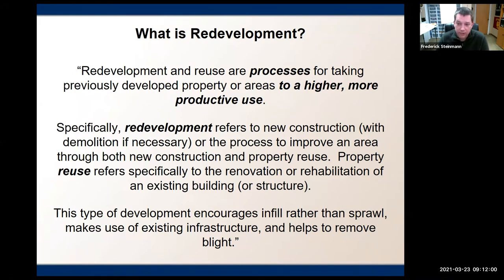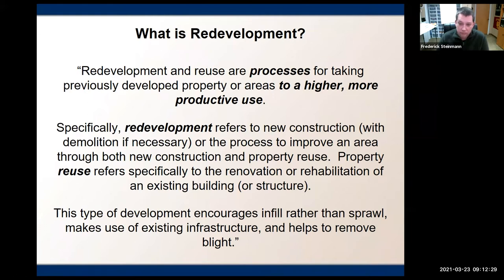Probably one of the best examples here in Reno of adaptive reuse is the old Riverside Inn. There are restaurants on the ground floor and residential space above for artists, right at the corner of the Truckee River and Virginia Street. That was a redevelopment project funded primarily by the Reno Redevelopment Agency. It was a building that still had some life left to it. Instead of remaining vacant and abandoned — which it had been for a number of decades — the city of Reno and the Reno Redevelopment Agency partnered with developers to revitalize it and bring it back into productive use.